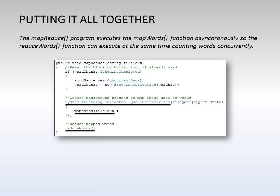Now that we've covered all the functions required for our simple MapReduce program, let's put them all together in a single master program. What you can see is we have an asynchronous call to run the mapping portion — the MapWords function — in the background while the ReduceWords function is running in the foreground. It's also important to note that the reason we use the blocking collection wrapped around the individual words is so the MapWords program can notify the ReduceWords program when it is done, and the ReduceWords program also knows when it should terminate, knowing that it has processed all of the words and that no more words are going to be produced.